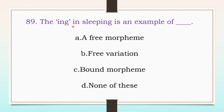The '-ing' in 'sleeping' is an example of: a free morpheme, free variation, bound morpheme, or none of the above. The answer is C, bound morpheme.